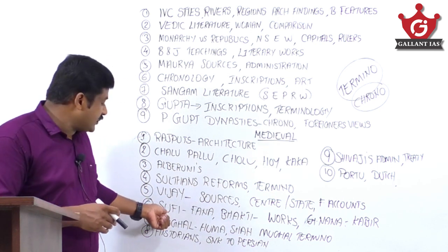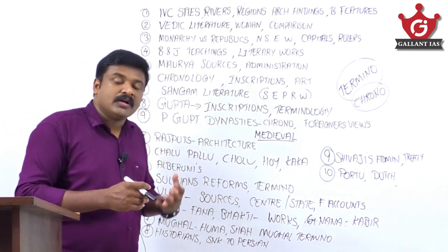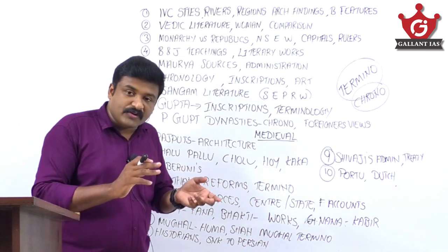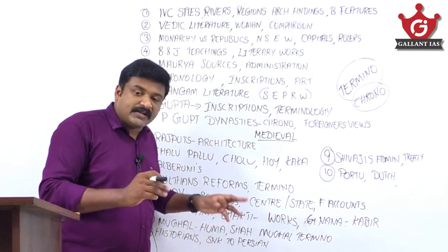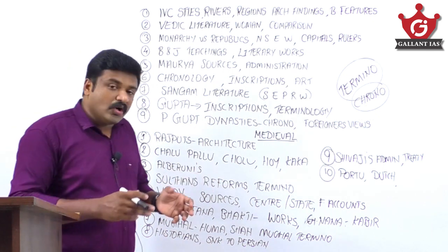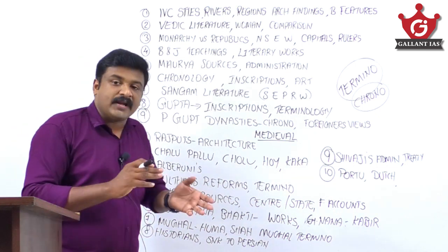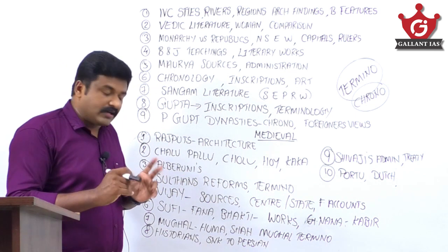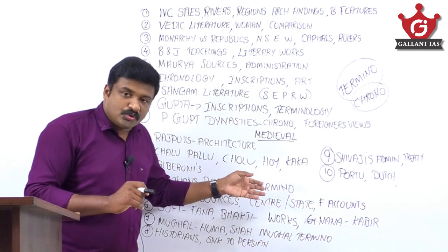For Sufi and Bhakti movements — Sufi terminology like fana and ziyarat is important, as are the names of different Sufi silsilas and their saints. For the Bhakti movement, know the different Bhakti saints and their literary works. The comparison between Guru Nanak and Kabir is important due to current relevance.